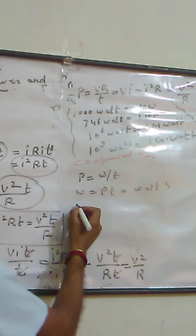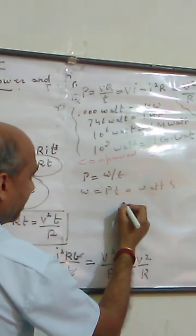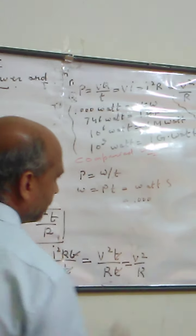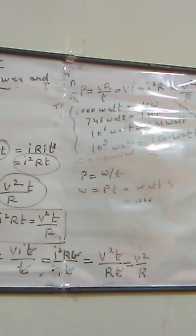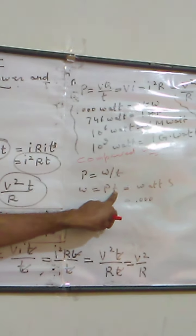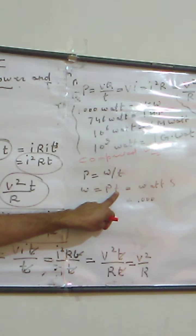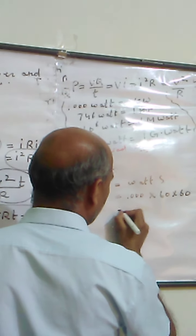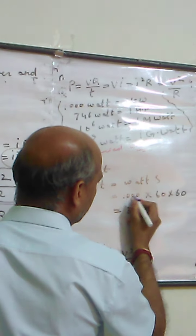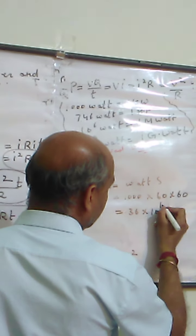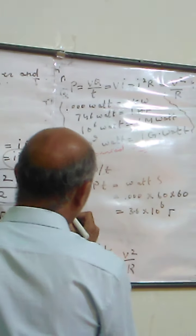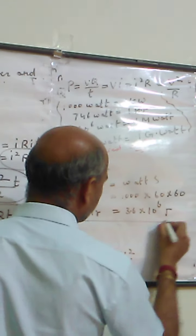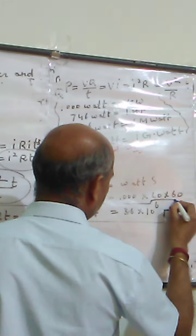Taking power in kilowatts, that means 1000 watts, and converting time into hours — one hour is 60 into 60 seconds — so 1 kilowatt-hour equals 1000 watts multiplied by 3600 seconds, which gives us 3.6 into 10 to the power 6 joules.